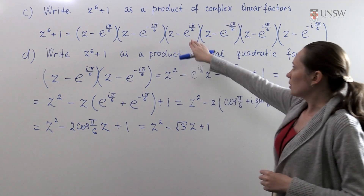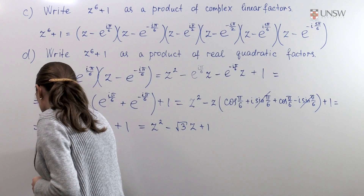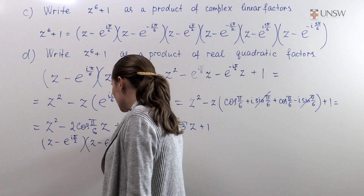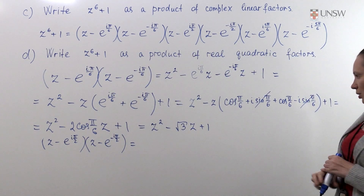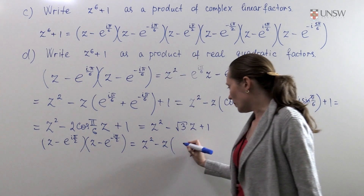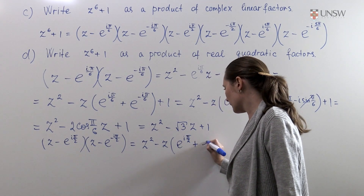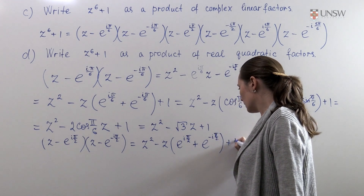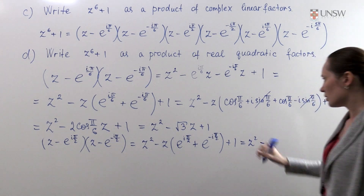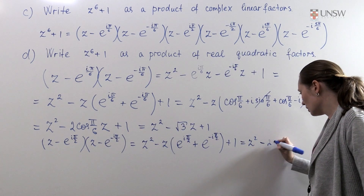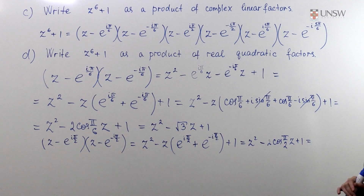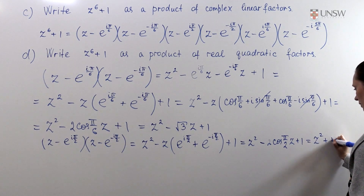We can do the same for the second pair of brackets: z minus e to the iπ/2 and z minus e to the minus iπ/2. Doing the same thing as before, we arrive at z squared minus 2cos(π/2)·z plus 1. And since cos(π/2) equals 0, these two brackets give us z squared plus 1.